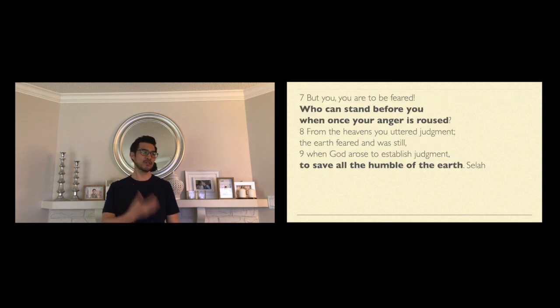We see in verse seven where we can ultimately find that peace. The psalmist goes on to pray: But you God, you are to be feared. Who can stand before you when once your anger is roused? The psalmist is in tension because he understands that God is providential, but as God brings these things into his life, he's wondering: God, it's too much for me. This challenge is too much for me. So he asks, who can stand before you when once your anger is roused?